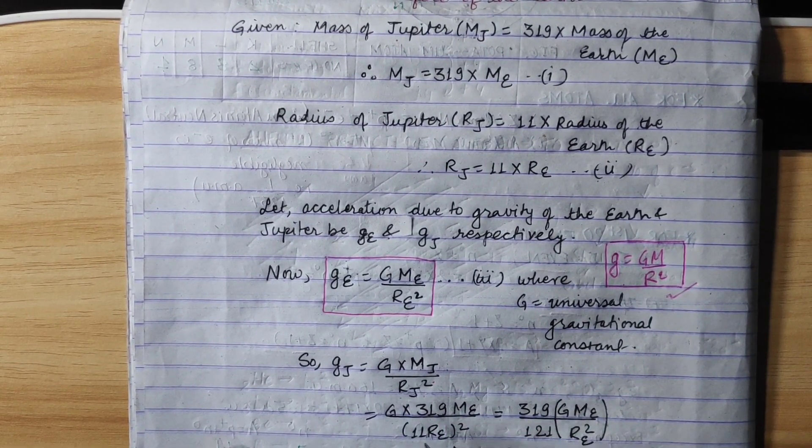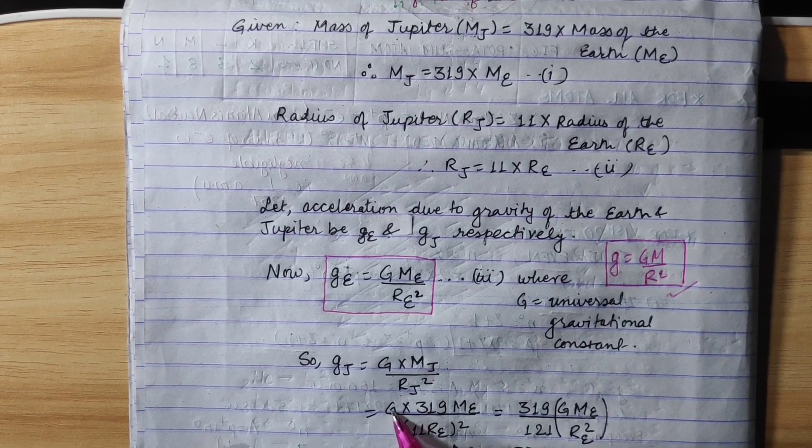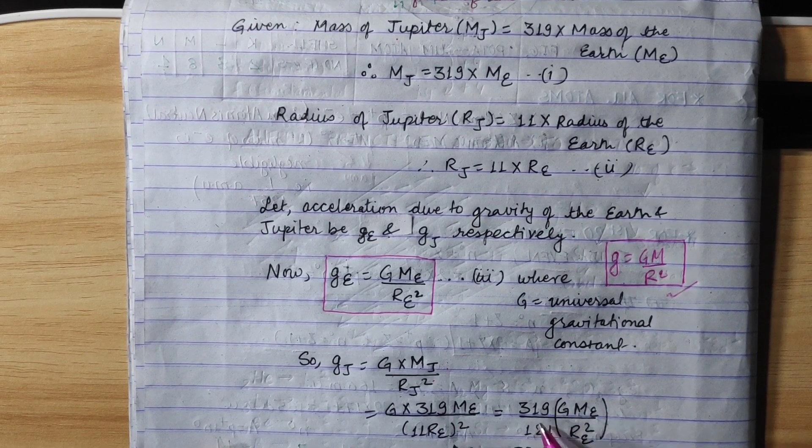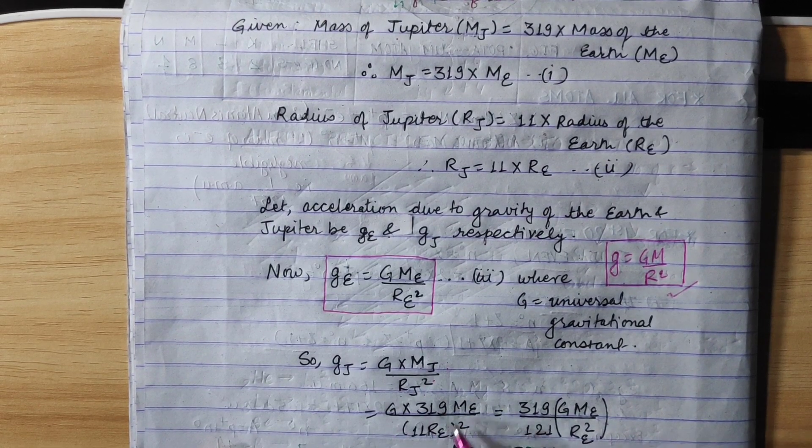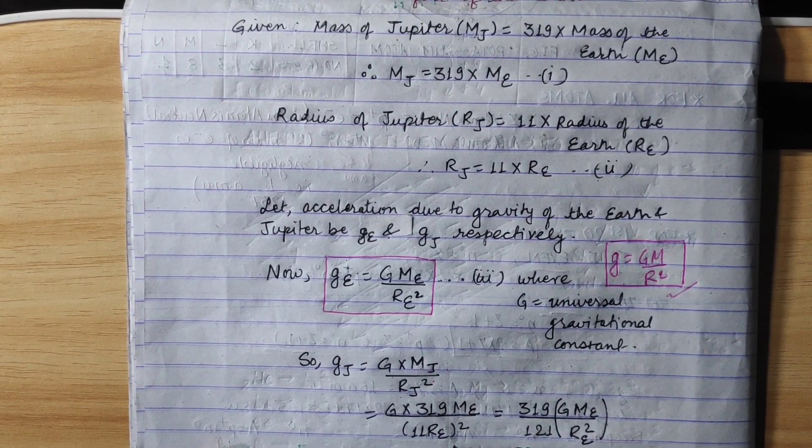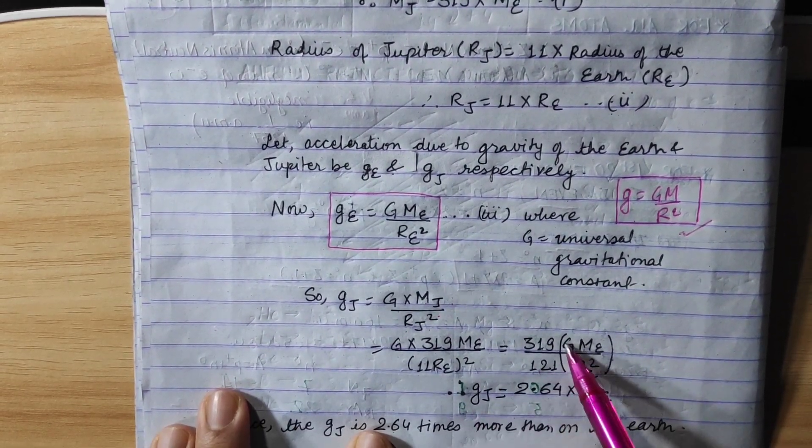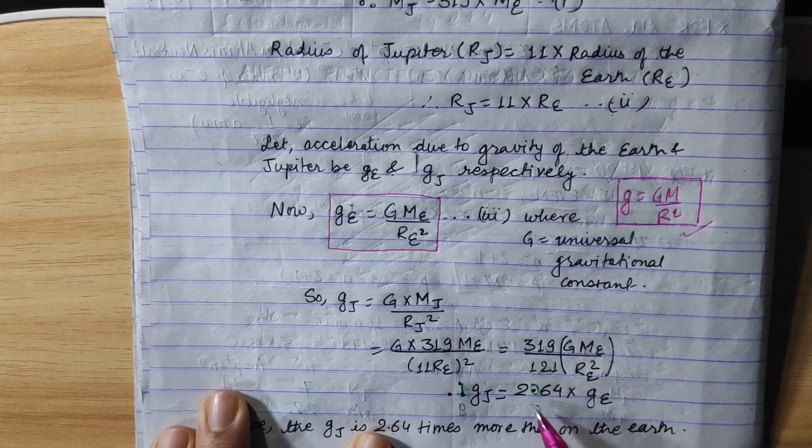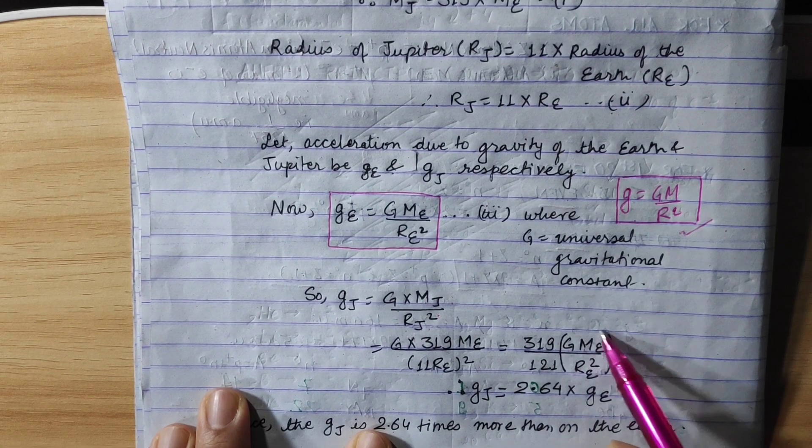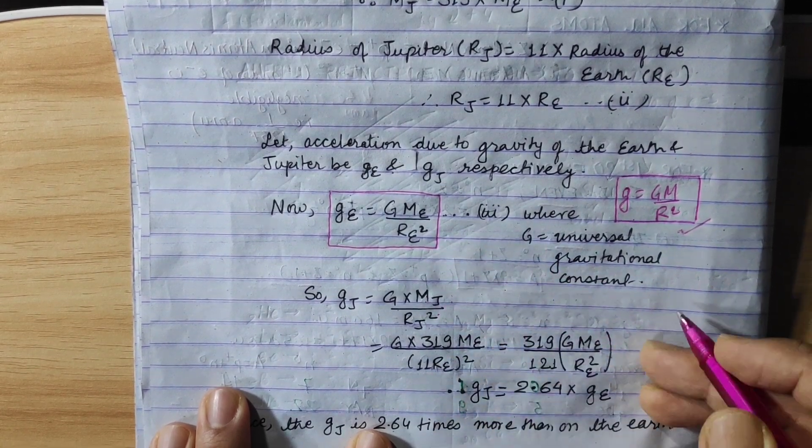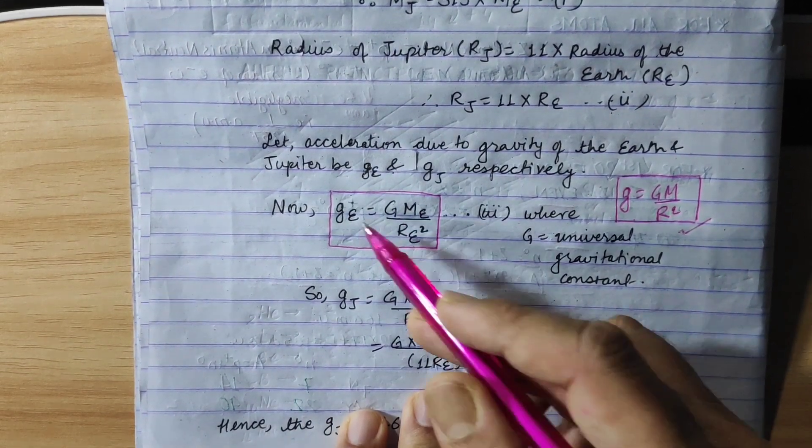This gives us 319 in the numerator and 121 in the denominator from 11 squared. So Gj equals 319 over 121 times GMe over Re squared.